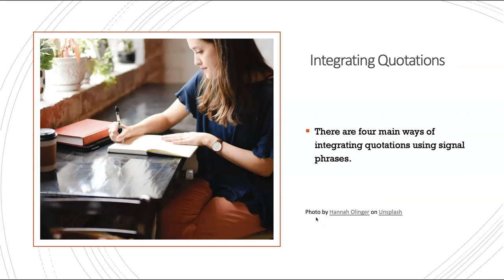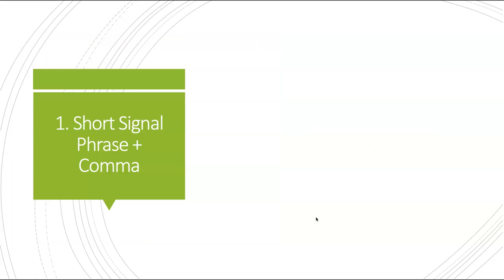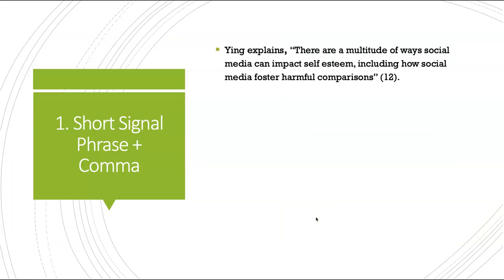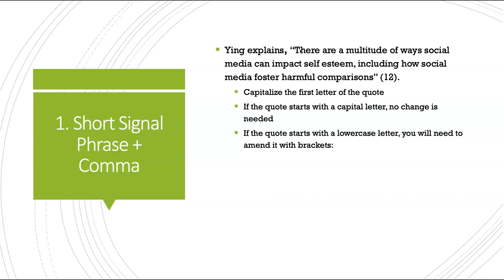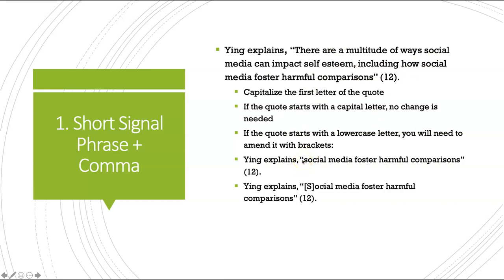There are four main ways to integrate a quotation with a signal phrase. Number one: you can use a short signal phrase with a comma — for example, 'Ying explains,' and then a comma. Notice that the quote should start with a capital letter, so there's a capital T here. If the quote already starts with a capital letter, just leave it. But if you want to start in the middle of a sentence where the quote begins with a lowercase letter, you use brackets to make it a capital. After a comma, always start a quote with a capital letter: signal phrase, comma, capital letter.